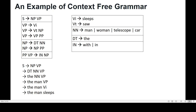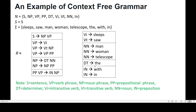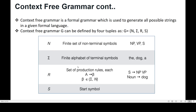One thing I forgot: the right-hand side of the rules can be epsilon, which means the empty sequence. That means on the right-hand side we can have nothing, or epsilon — it represents the termination of the rule.